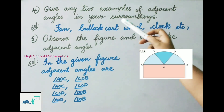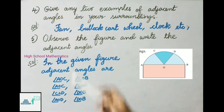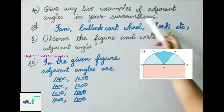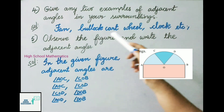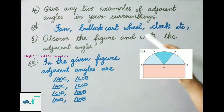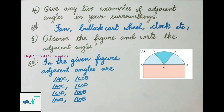Question number four: give any two examples of adjacent angles in your surroundings. Fan blades, card wheel, clock, etc. are examples of adjacent angles in our surroundings.